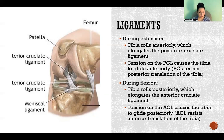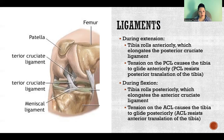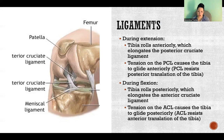When going in the opposite direction — during flexion — the tibia rolls posteriorly, again due to the shape of the condyles. When that happens, it elongates the ACL, the anterior cruciate ligament, which puts tension on the ACL and causes the tibia to glide in the posterior direction. So to reiterate: the rolling that takes place during extension and flexion happens because of the shape of the condyles, and that rolling puts tension on the PCL or ACL depending on the direction, which then causes glide in the anterior or posterior direction.